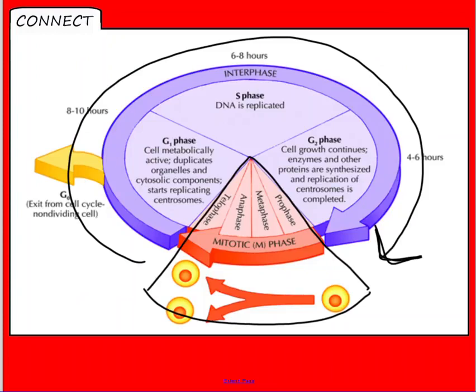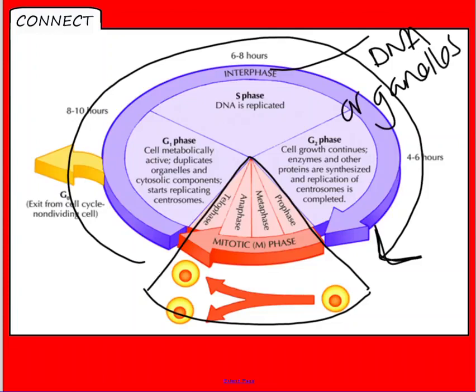So during this time, you've got interphase, which is where the DNA and the organelles are replicated. And when this happens, you'll find that the mass of the cell doubles. So only a small portion is dedicated to actual division of the cell cycle.